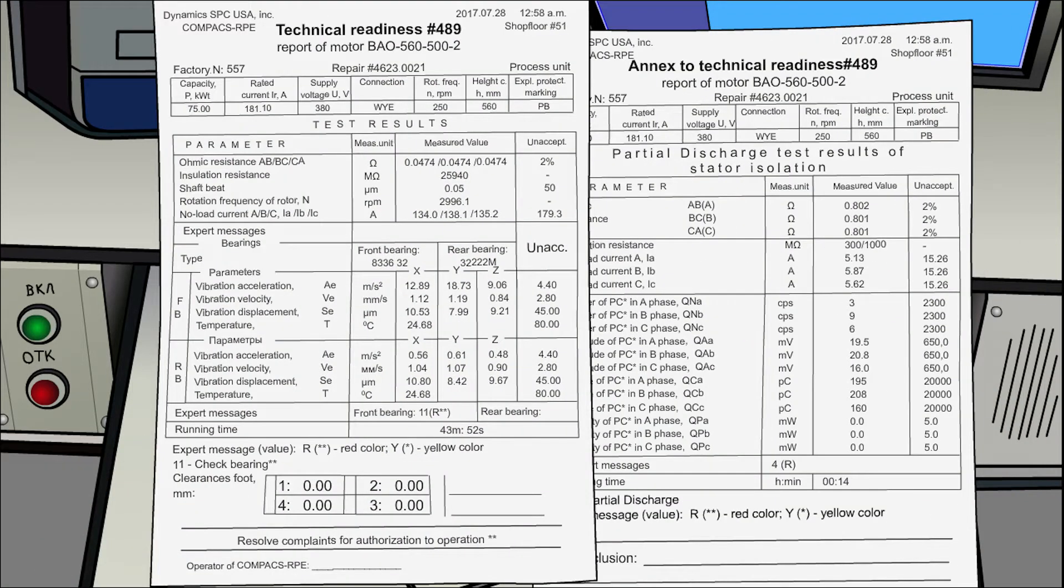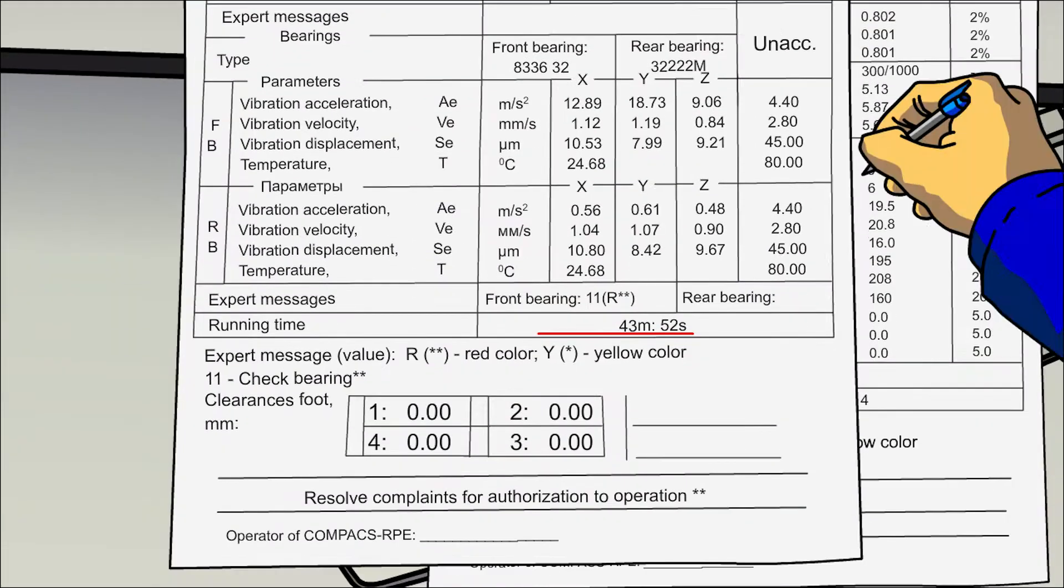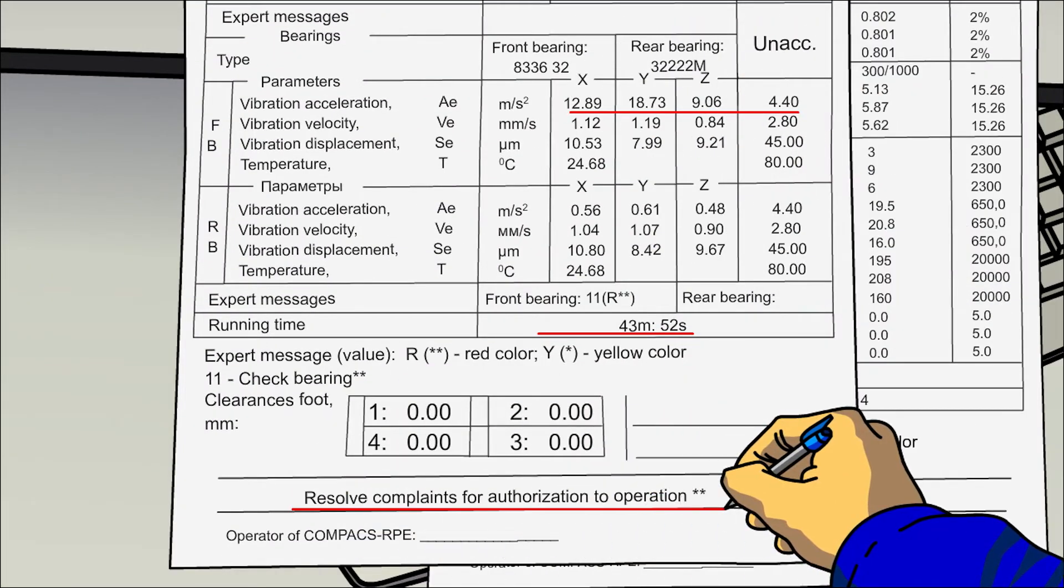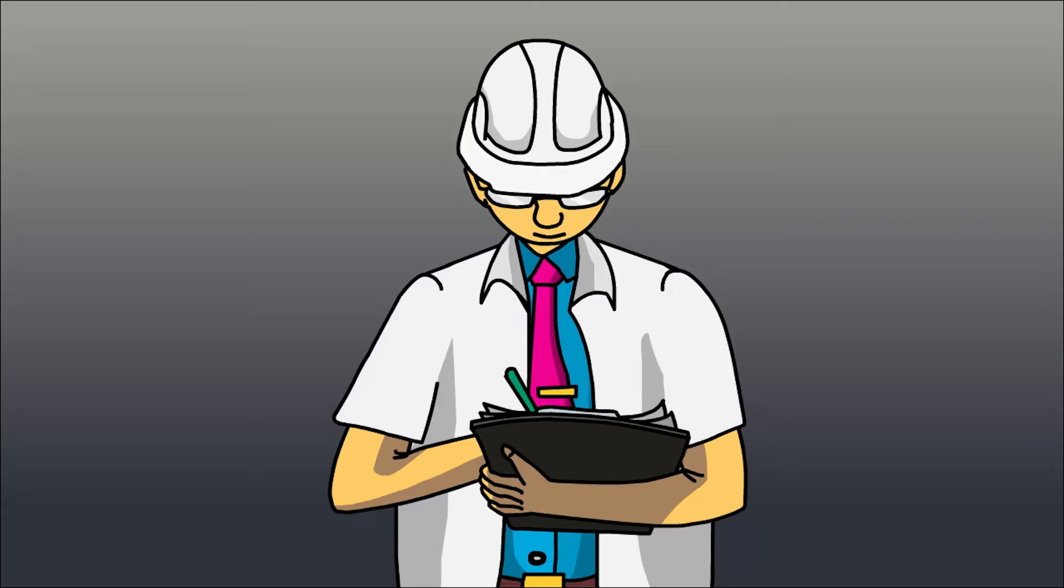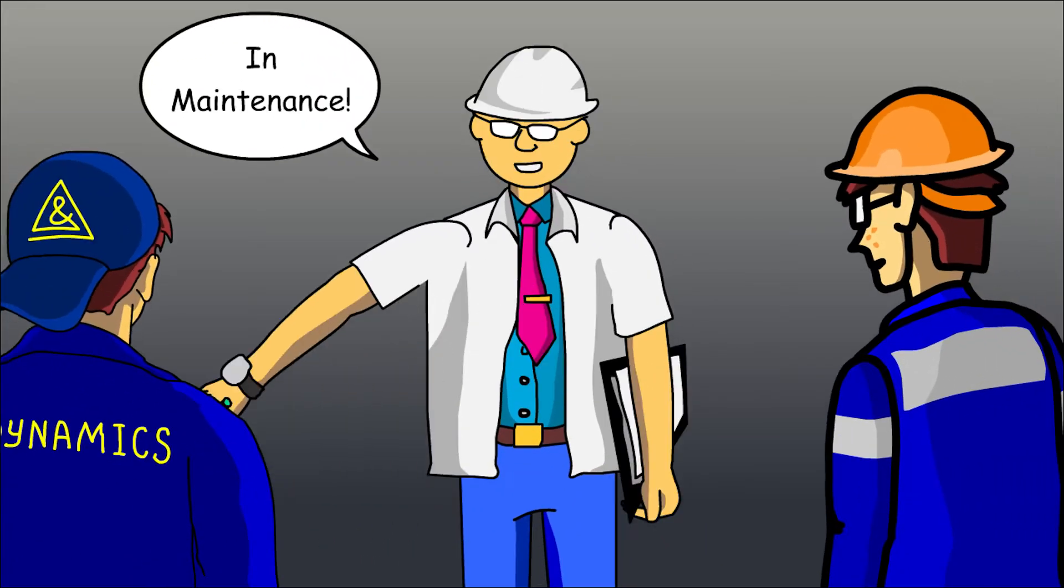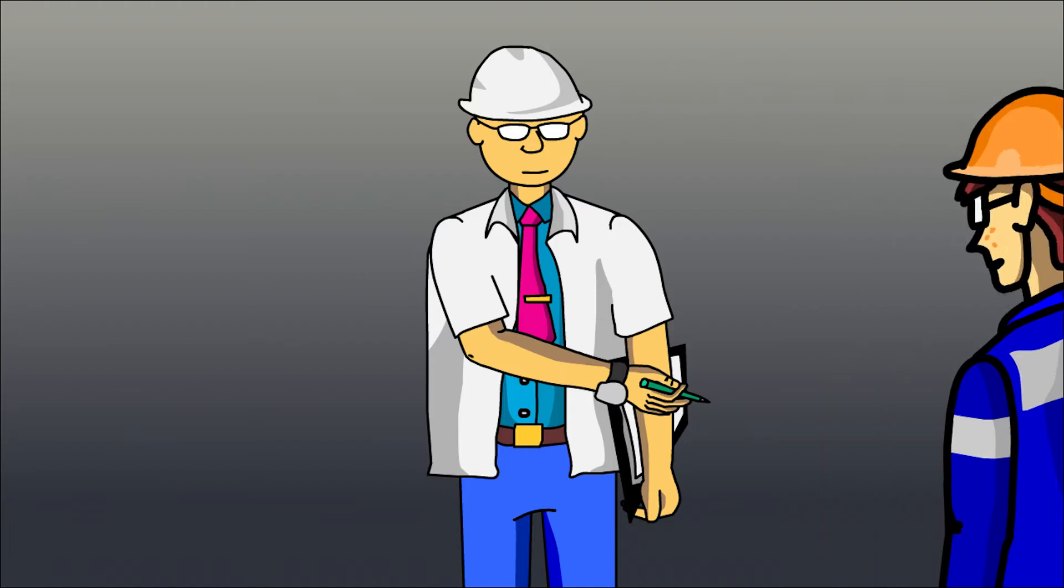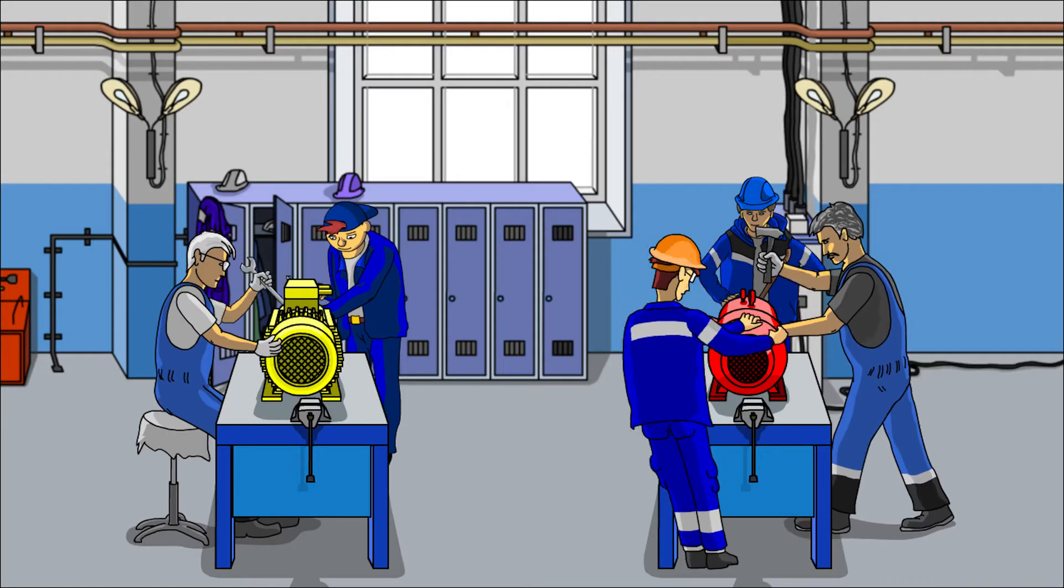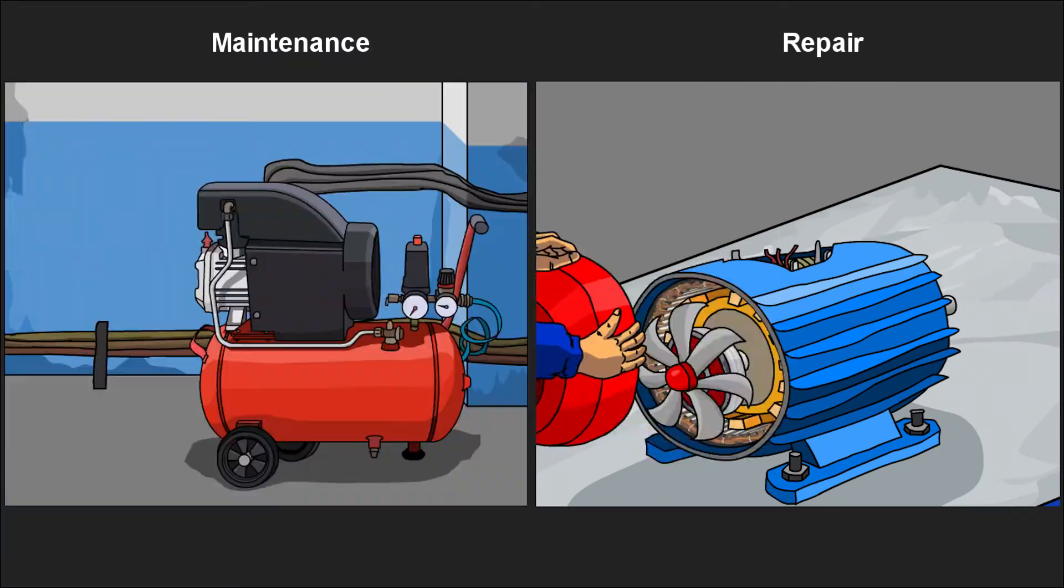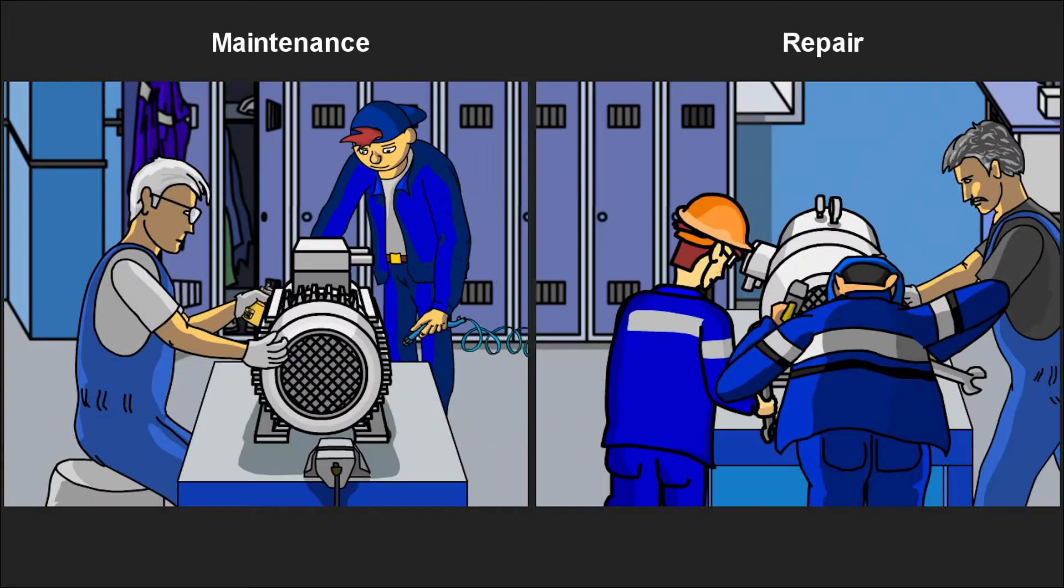The report contains the time when the test was performed and the expert system's diagnosis with causes of the motor's malfunctions. Using this data, a detailed schedule of repair and maintenance works is created. This schedule should be followed in order to fix the electric motor.